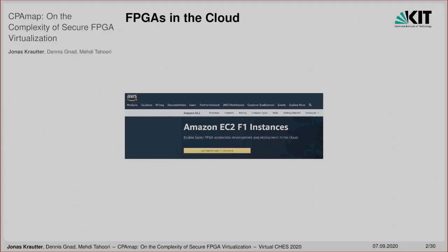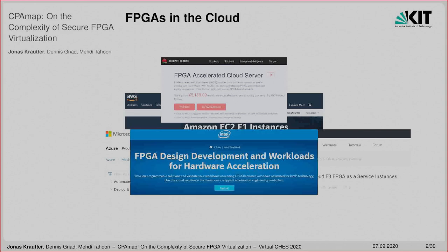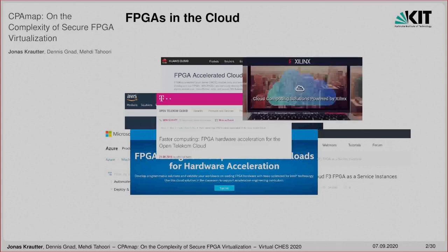Before talking about FPGA virtualization, I want to quickly talk about FPGAs in the cloud in general. Amazon was probably among the first companies to offer FPGAs as generic accelerators in their cloud computing services, but other companies were quick to join, especially with emerging technologies such as artificial intelligence in mind. With the increasing amount of resources available per FPGA chip, virtualization and multi-tenancy of FPGAs is a logical next step to further optimize the utilization and efficiency of these accelerators.